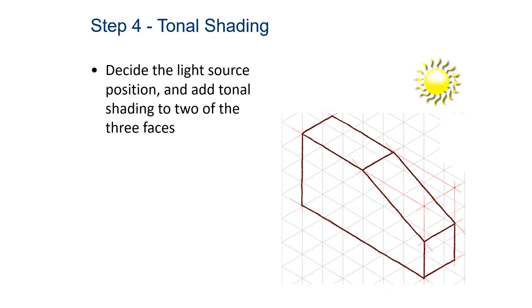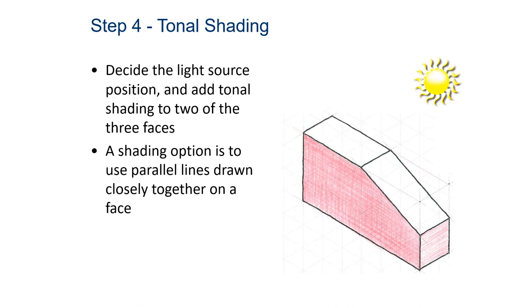And then tonal shading, like we talked about in the previous video. Decide the light source position and add tonal shading of two of the three faces. So the top stays light. You don't have to do anything there. And then this is some nice cross-hatching here. They went one direction, looks like they went this way, and then they went the other way. And you get it darker than if you just go this way. So cross-hatching, good option for tonal shading. And that looks like it's even with a red pen. So even if you had pen, you could still do shading. You don't need a pencil to do shading.